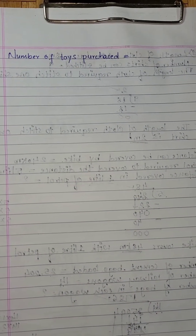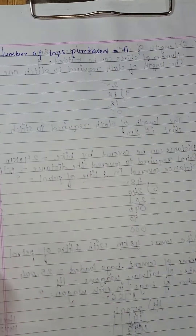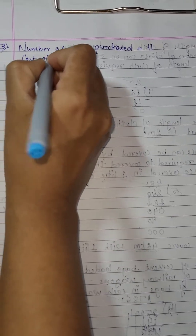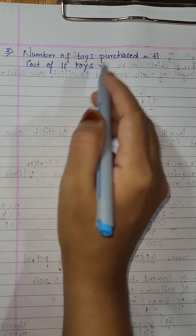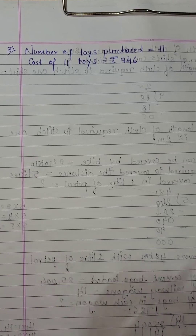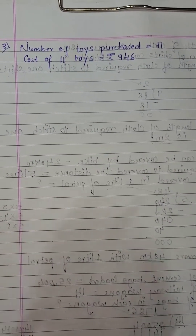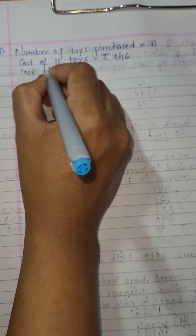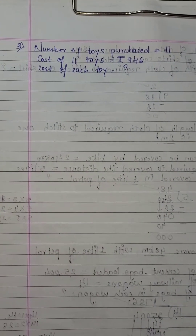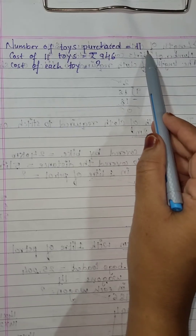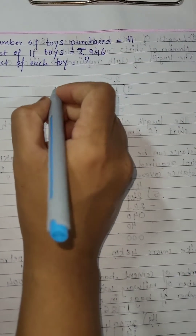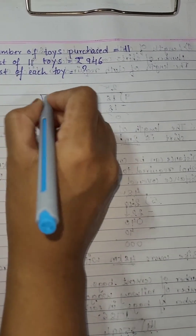The second sentence: cost of 11 toys is rupees 946. Now what you have to find out is the cost of each toy — that will be a question mark. Number of toys purchased: 11. Cost of 11 toys: 946. So 946 has to be divided by 11.